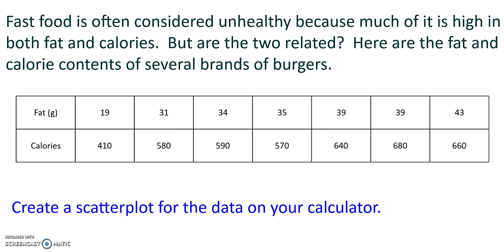So fast food is often considered unhealthy because much of it is high in both fat and calories. But the question is, are the two of those things related? So we have a table of information where we have fat and we have calories. We're going to call fat our variable x or our input and we're going to call calories our variable y or our output. So what this table is telling us is that some piece of fast food with 19 grams of fat is going to have 410 calories. Some piece of fast food with 43 grams of fat is going to have 660 calories.